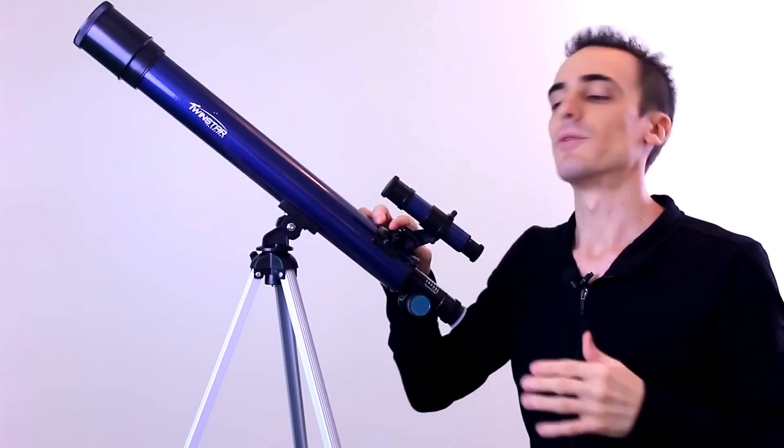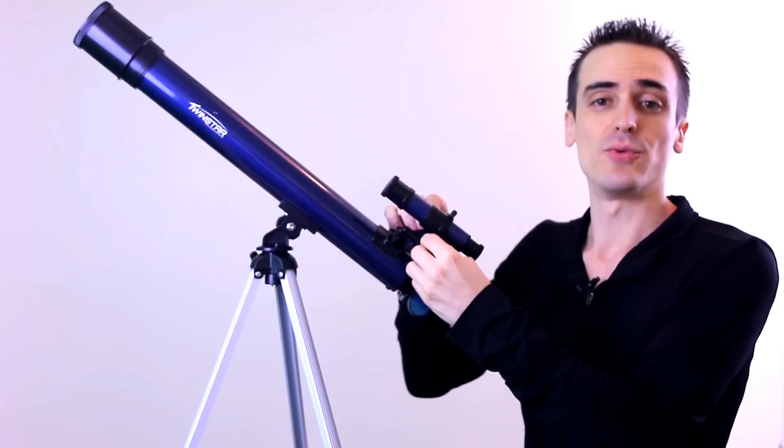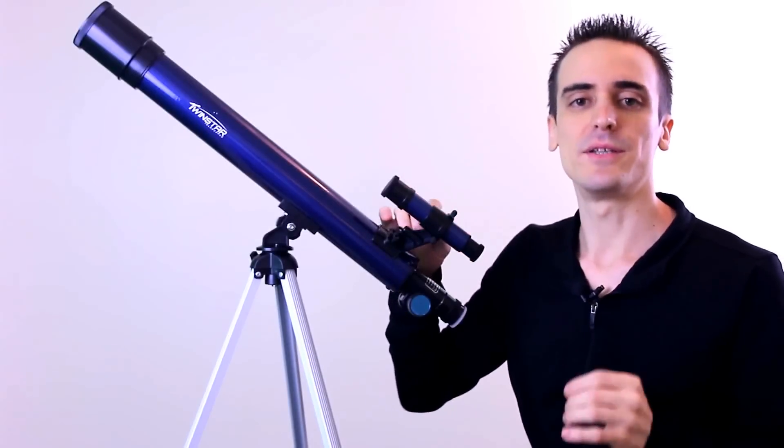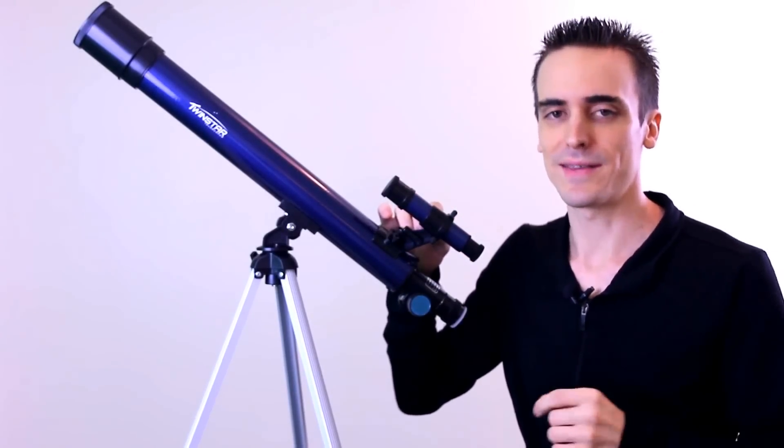And we're done. Now you can adjust the finder scope by using the adjustment screws here to basically align the scope. And you want to do this after you're completely done assembling the telescope though. I'll explain this in a little bit more detail at the end of the video.